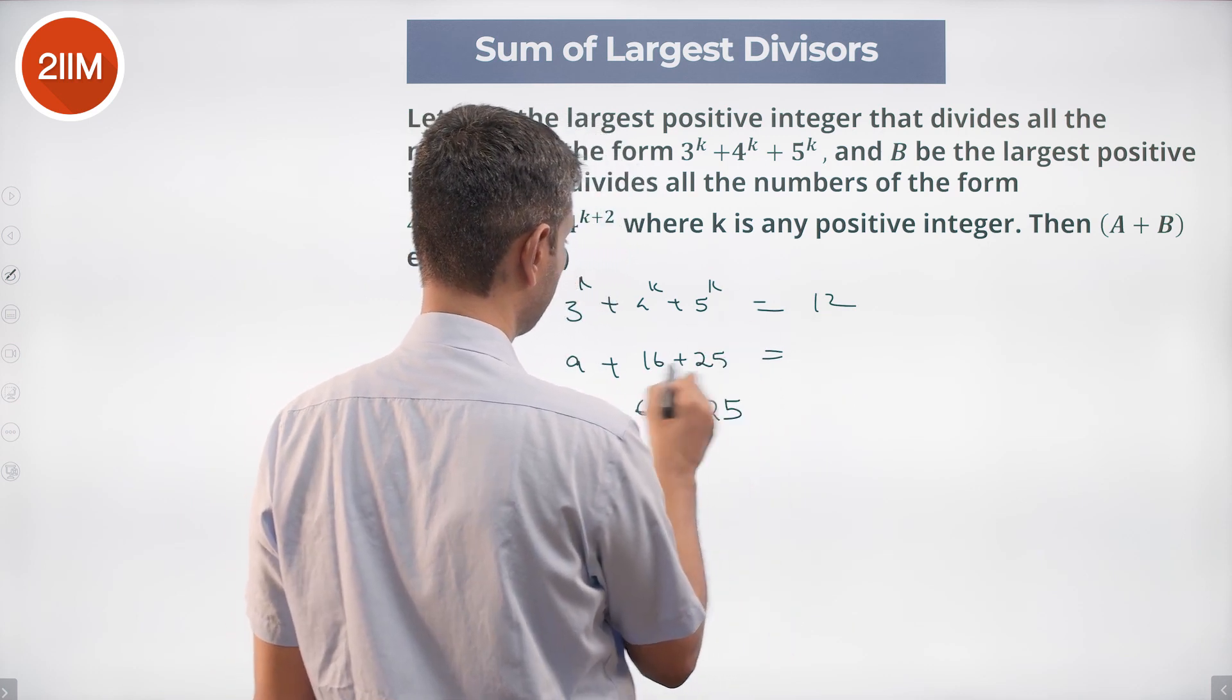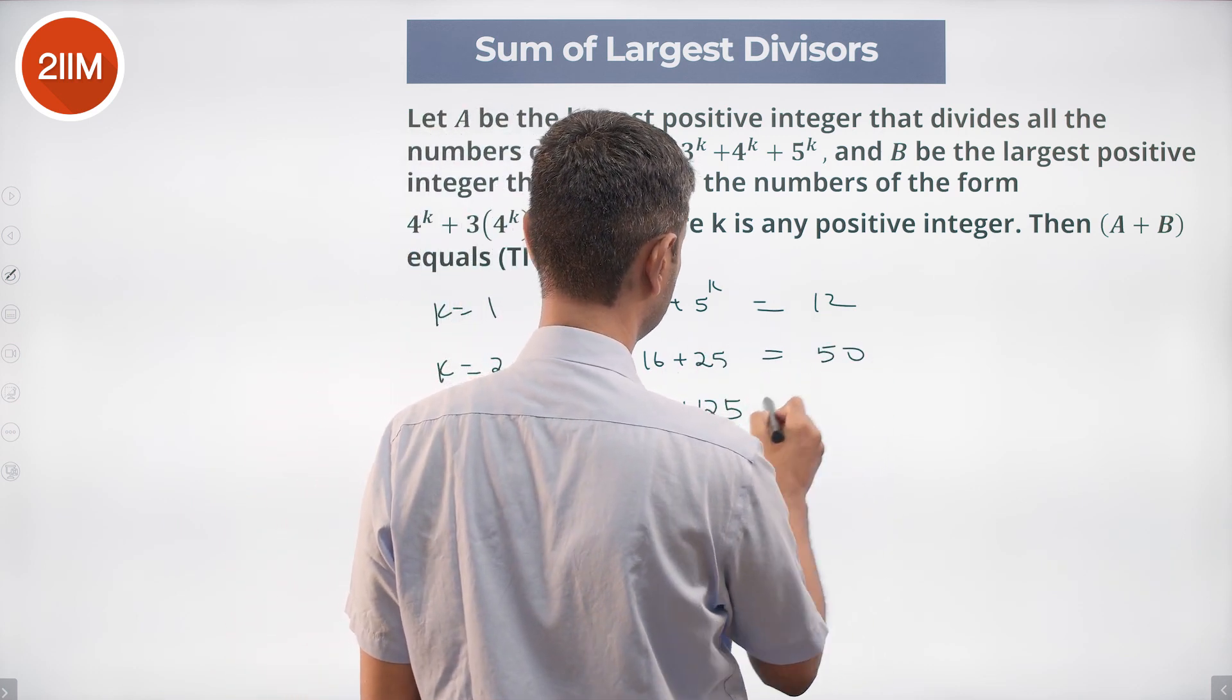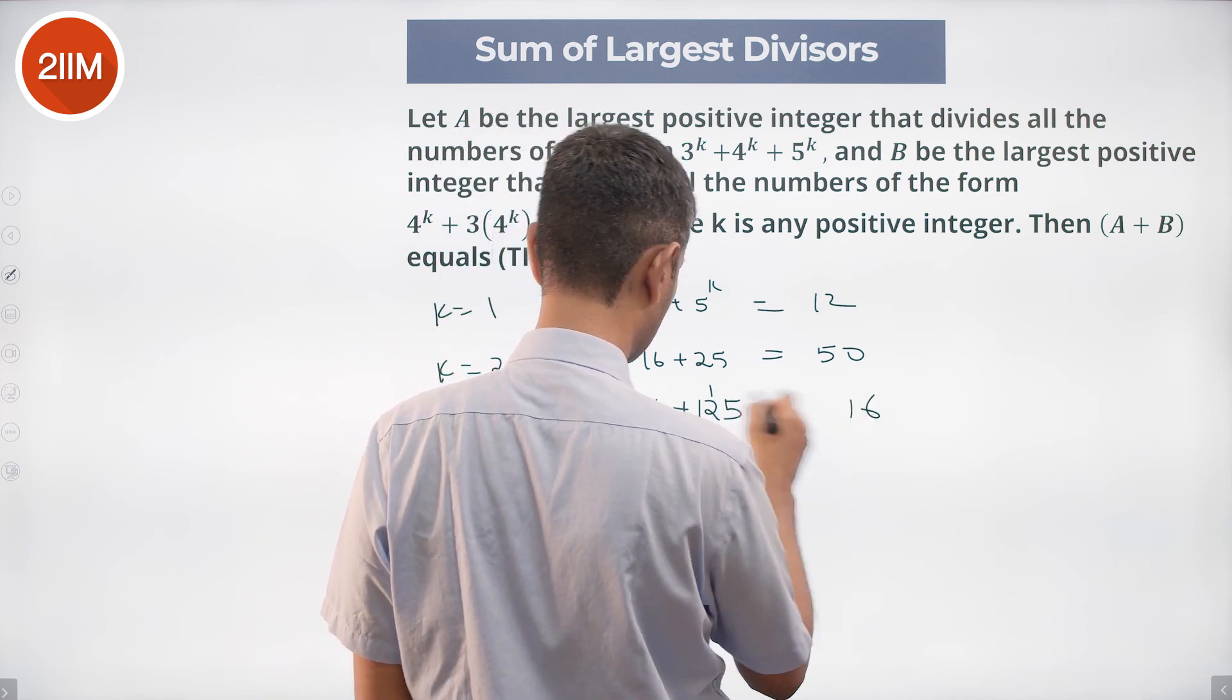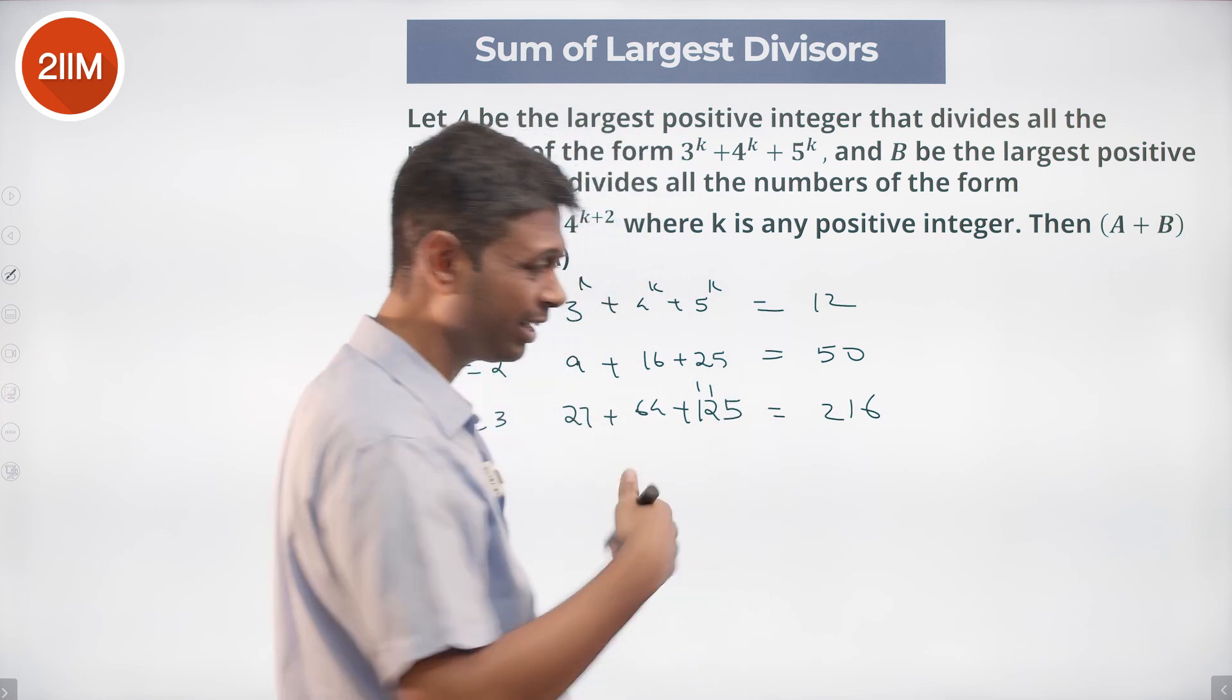This is 12. 9 + 16 is 25, 25 + 25 is 50. 9, 16, 6, 1, 3 + 6, 9 + 2, 11, 1, 2, 16. We can keep on going.